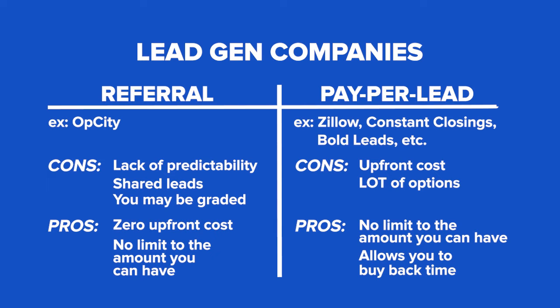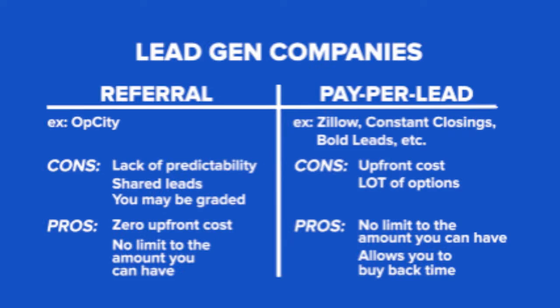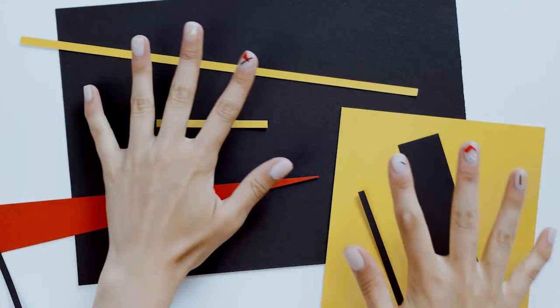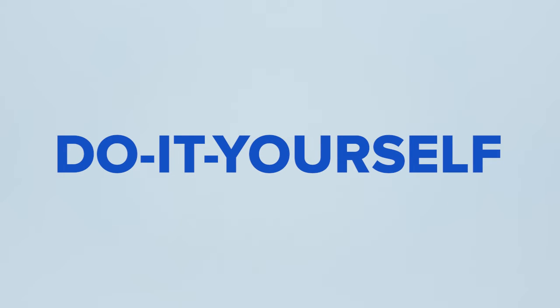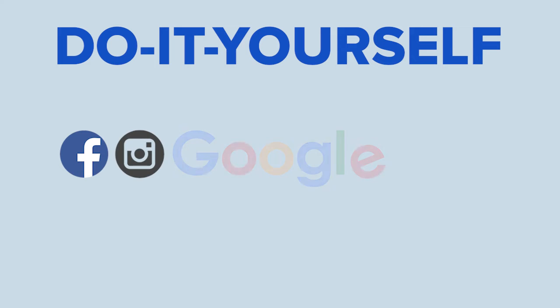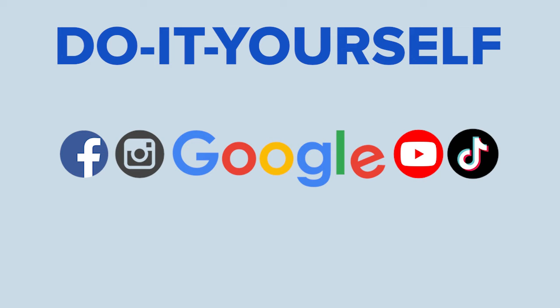So I recommend partnering up with either of these. Ideally, go sign up for as many of the referral programs as you can — there's no upfront cost — and then start the research process with the pay-per-lead generation services because they'll offer you higher volume and allow you to buy more of your time back. And lastly, you have the option to do it yourself — running advertisements on Facebook, Instagram, Google, YouTube, TikTok, and more. There are a lot of different online platforms you can use to create your own consistent pipeline, and it's something that's simple to get up and running within the next couple of days.